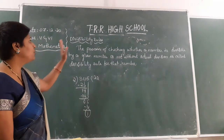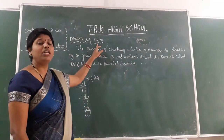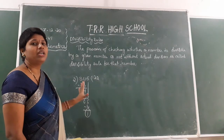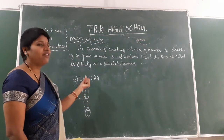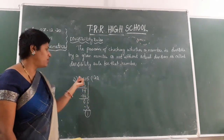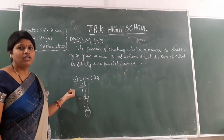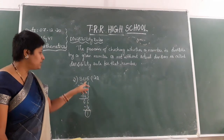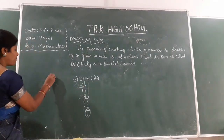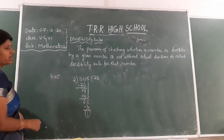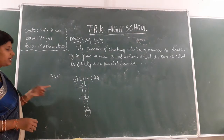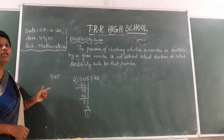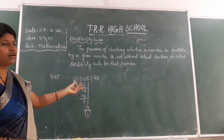If you get remainder 0, you can say that number is divisible. But by using divisibility rules, without doing actual division, you can say whether a given number is divisible by a particular number or not. By just seeing 345, without any division, I can say it is not divisible by 2.